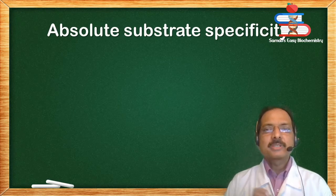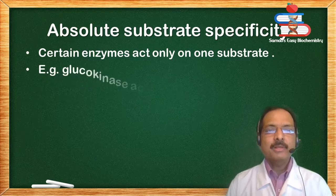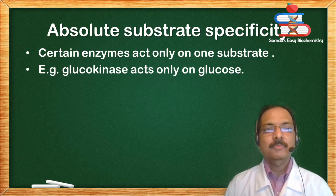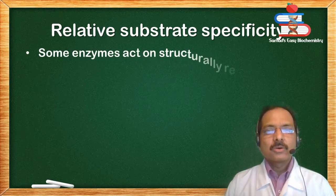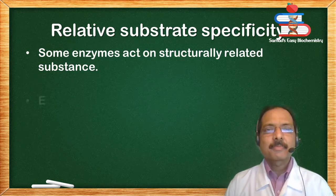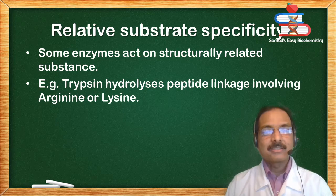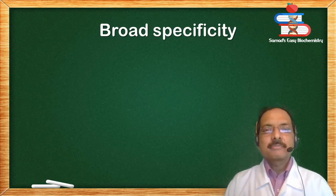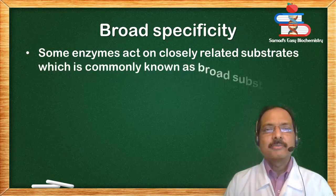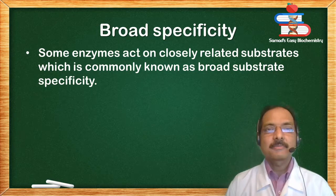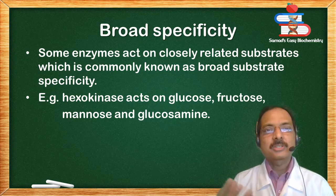Absolute substrate specificity: certain enzymes act only on one substrate. Example: glucokinase acts only on glucose. Relative substrate specificity: some enzymes act on structurally related substances. Example: trypsin hydrolyzes peptide linkages involving amino acids arginine or lysine. Broad specificity: some enzymes act on closely related substrates, commonly known as broad substrate specificity. Example: hexokinase acts on glucose, fructose, mannose and glucosamine — structurally related substrates.